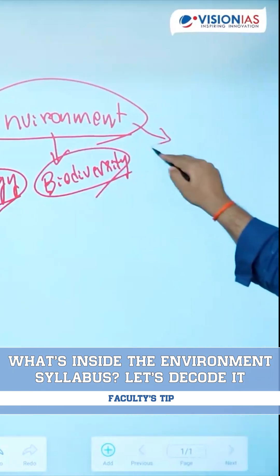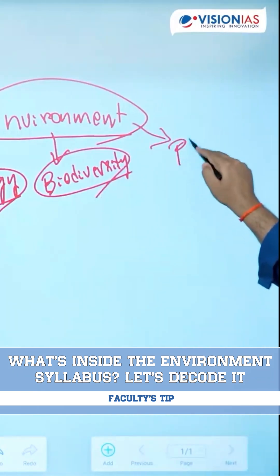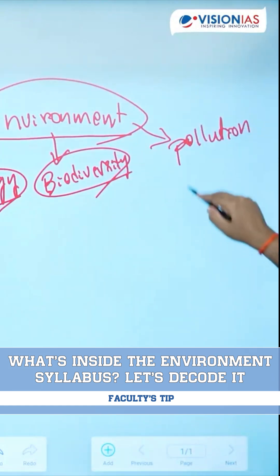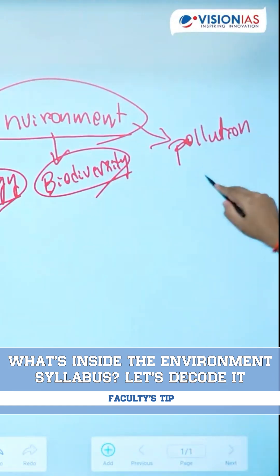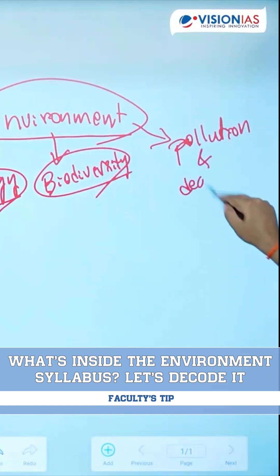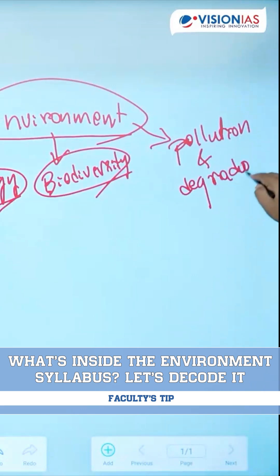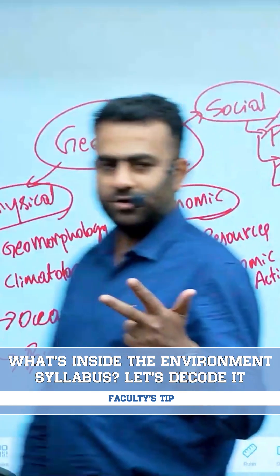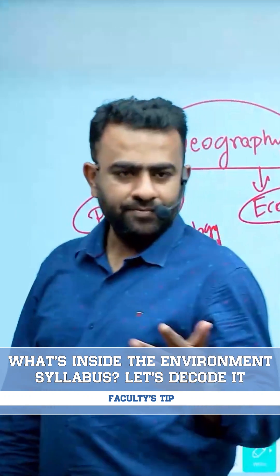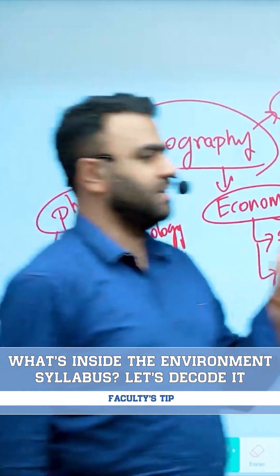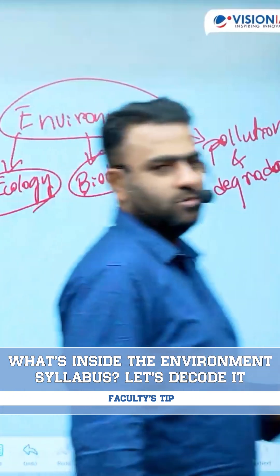And then comes pollution and degradation aspects — the important reasons behind the pollution and various different types of degradation. It starts from air pollution, soil pollution, water pollution, deforestation, and land degradation.